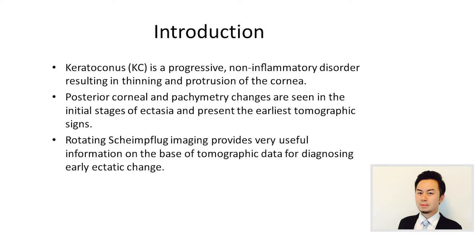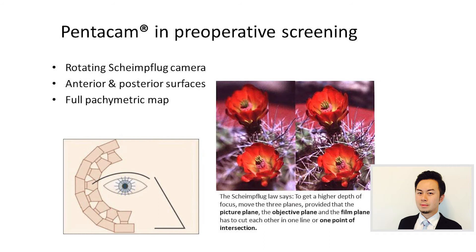The rotating Scheimpflug imaging, such as Pentacam, can provide very useful information based on topographic data for the diagnosis of these early-stage changes. The advantage of Pentacam is that it can show the anterior and posterior corneal surface clearly, and it can also generate a full pachymetric map of the cornea.